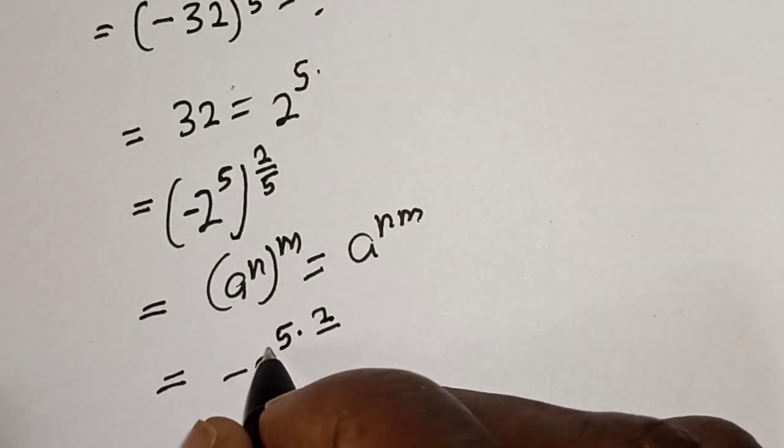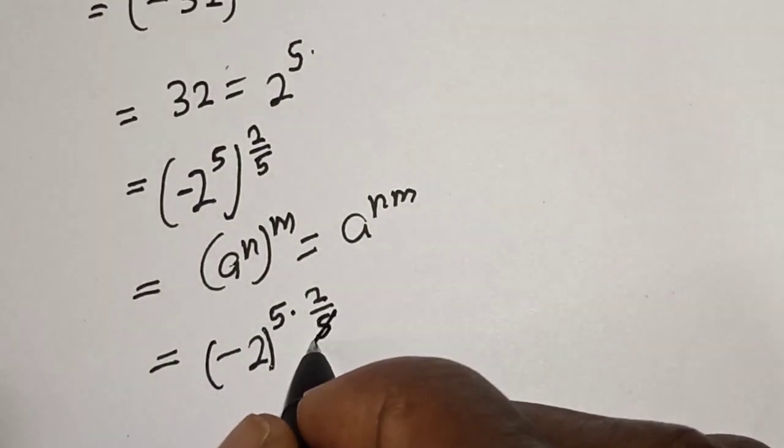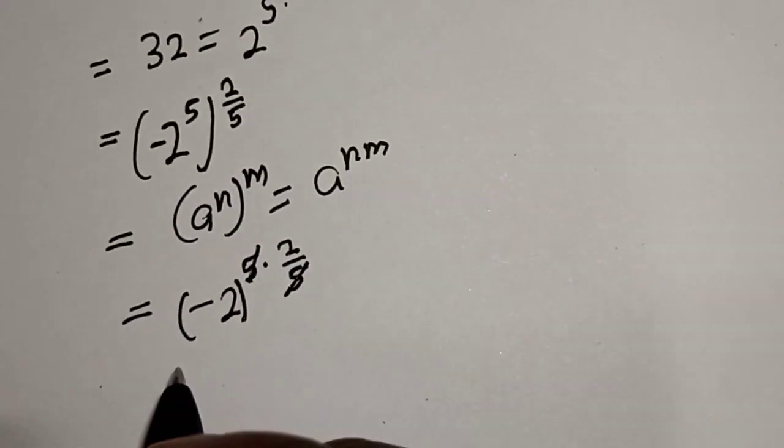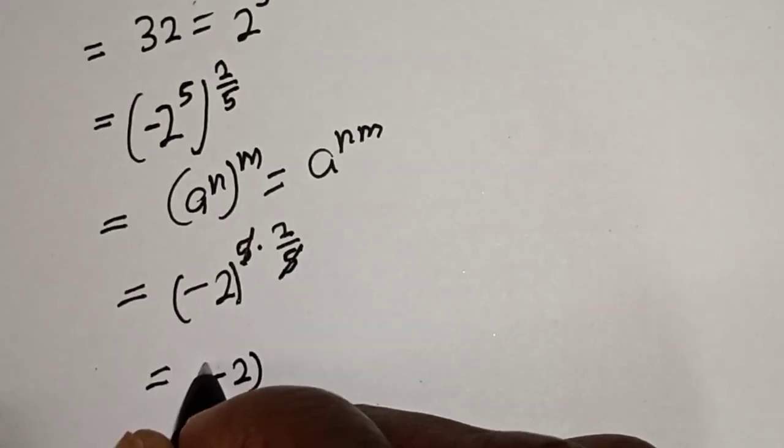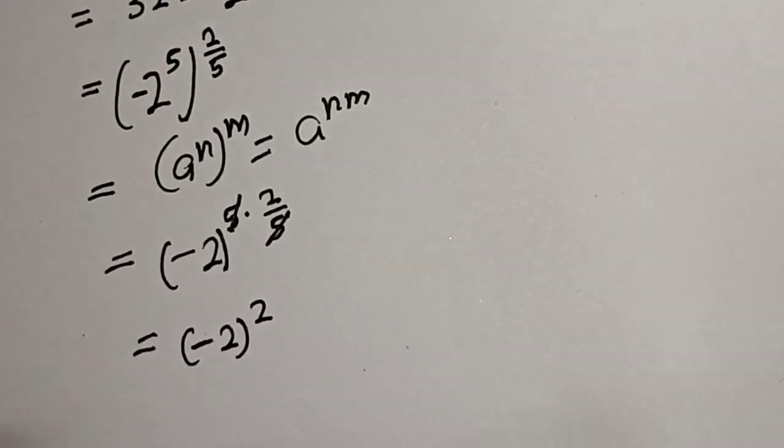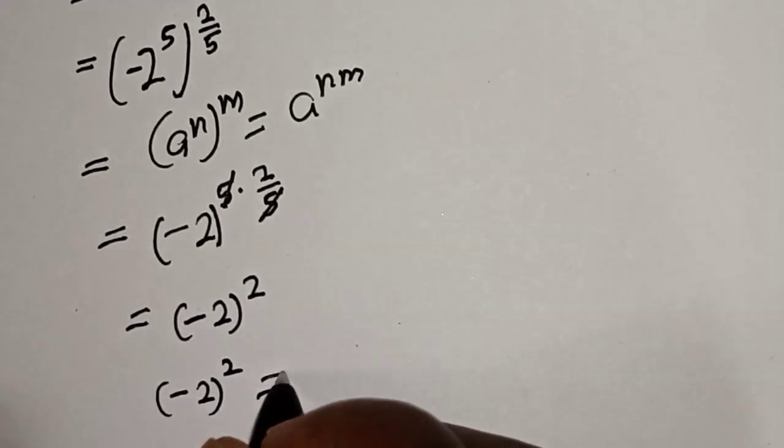This one cancels this, and this is equal to minus 2 squared. But minus 2 squared is equal to minus 2 multiplied by minus 2.